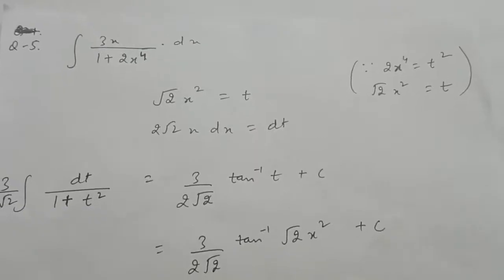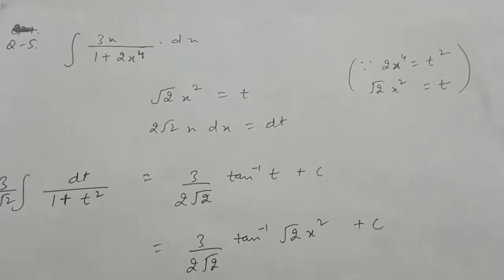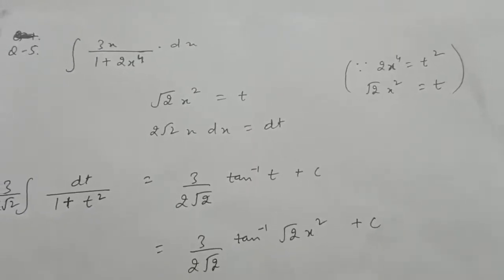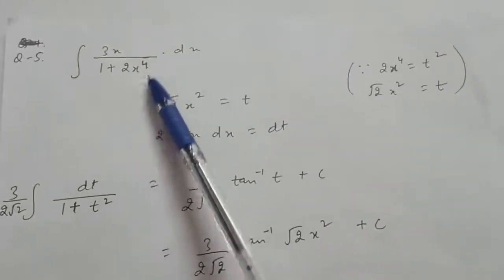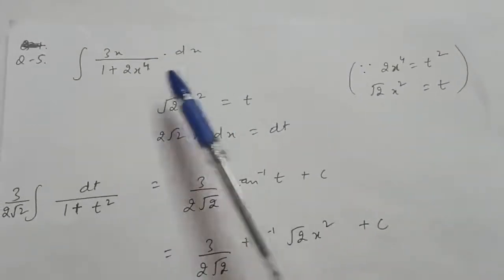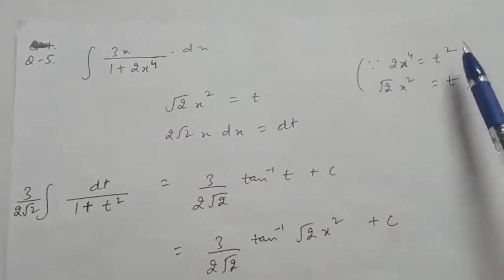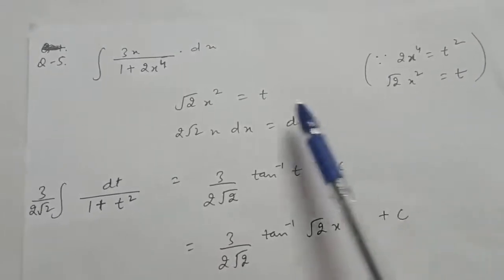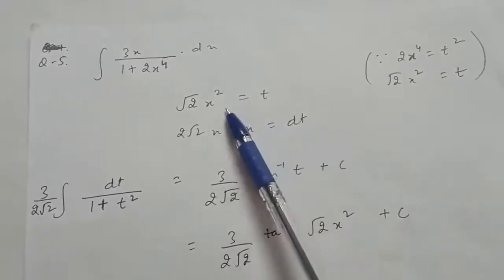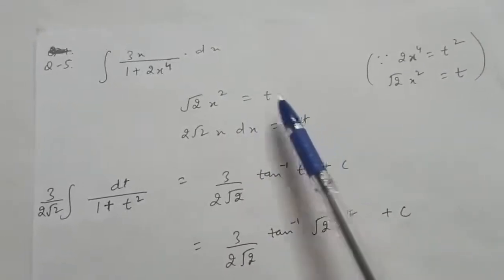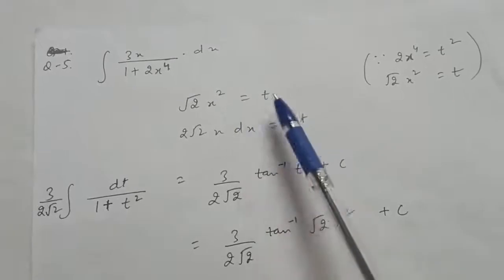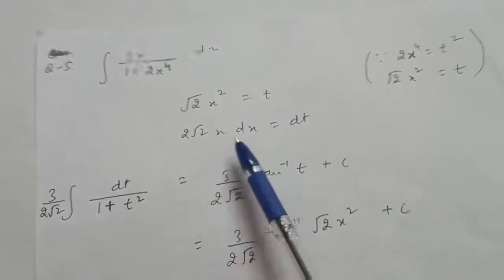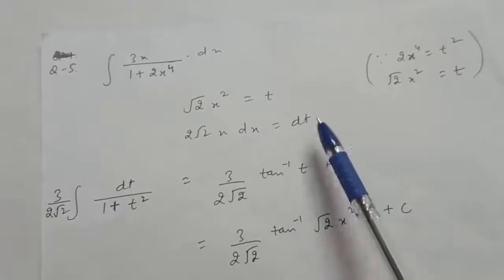For question 5th, as discussed in the previous lecture, we want to convert 2x⁴ into t². So let √2·x² equal to t. After differentiating both sides you get 2√2·x dx equal to dt.